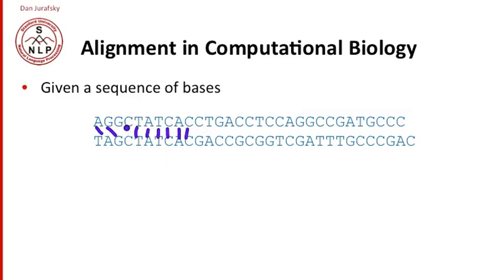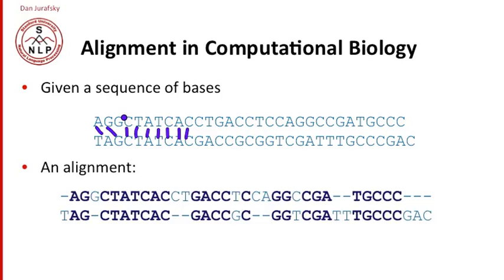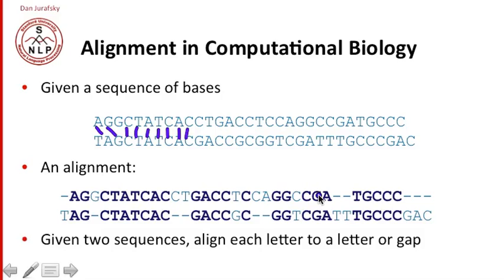So this C to here, so we have some, we can see that there's some kind of insertion there, and we can represent, again, that alignment between characters by showing this aligned string of symbols. So the task is, given two sequences, align each letter to a letter in a gap. That's our task in biology.